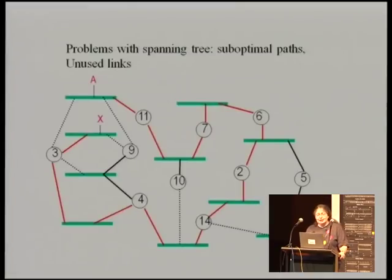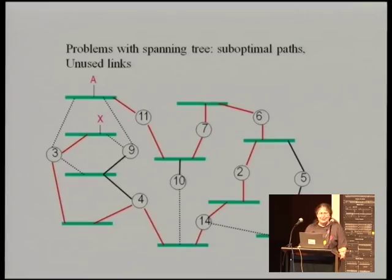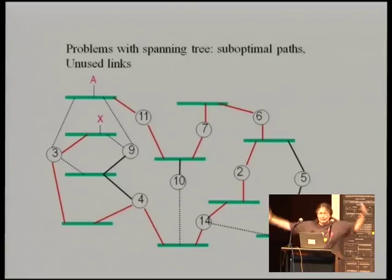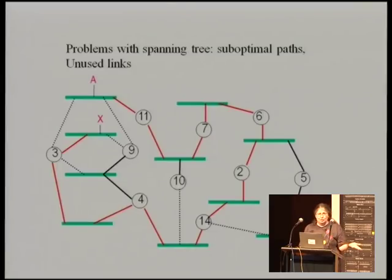The problem with Spanning Tree is that your paths are not optimal. If A is transmitting a packet to X, it has to go a really long way through many hops. You might think it was a silly algorithm — a smarter one could come up with better paths. But that's not the problem. If you have one shared loop-free topology, some people will be unhappy. Imagine the topology being a big circle: you have to chop at some place, and people on either side of the chop have to go around the long way. Traffic gets concentrated on the links used in the tree, and other ones don't get used at all.